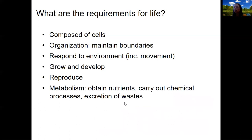Metabolism. This is a big one. A cell's metabolism is generally the chemical reactions that a cell carries out — obtaining nutrients, carrying out chemical processes, and then excreting the waste from those chemical reactions. This is everything related to what our bodies need to do in order to grow, develop, reproduce, and organize. That takes metabolism. It takes energy and chemical reactions to do work and carry out processes.